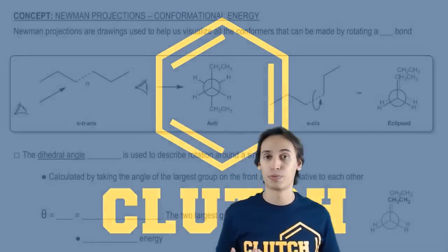Now that we understand that sigma bonds are free to rotate as much as they want, it turns out that there's a unique way to visualize this rotation and that visualization technique is called the Newman projection.